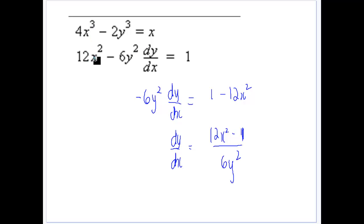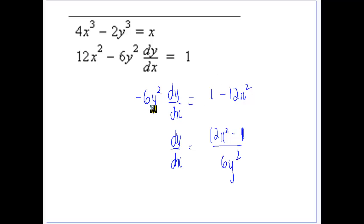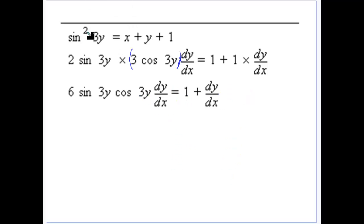Here are some more examples. 4x cubed becomes 12x squared. For 2y cubed, applying the chain rule gives 6y squared times dy/dx. Then x differentiates to 1. To isolate dy/dx, we take all other terms to the right-hand side, then divide by minus 6y squared, which changes the signs on both terms.